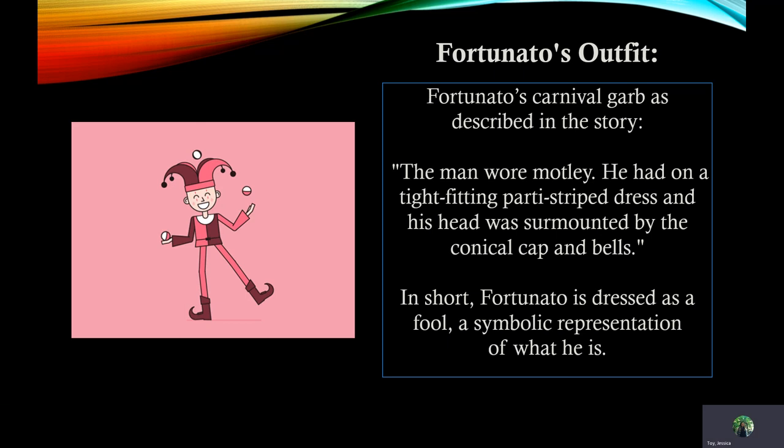Fortunato's outfit. Fortunato's Carnival costume, as described in the story, is similar to this picture here. The man wore motley — he had on a tight-fitting party-stripe dress and his head was surmounted by a conical cap and bells. In short, Fortunato is dressed as a fool, a symbolic representation of what he is. And that concludes our background on The Cask of Amontillado.